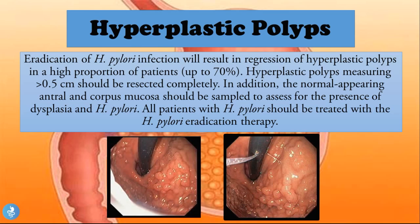The normal-appearing antral and corpus mucosa should be sampled to assess for dysplasia and H. pylori, and all patients with H. pylori should be treated with eradication therapy. Hyperplastic polyps measuring more than 0.5 centimeters should be resected completely. A separate video on H. pylori eradication therapy is available — a link is provided in the description.